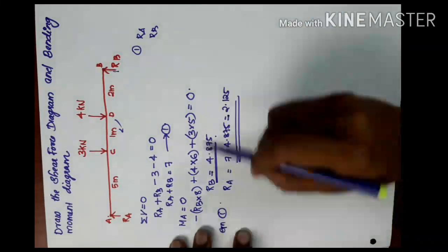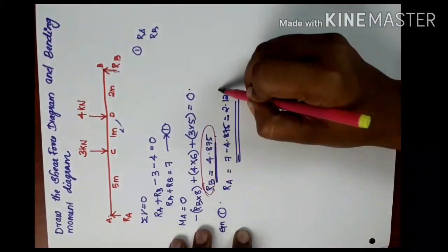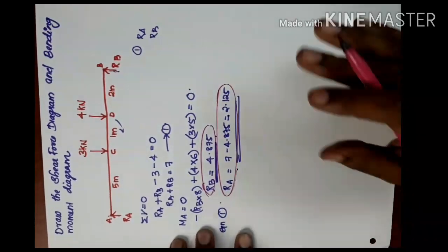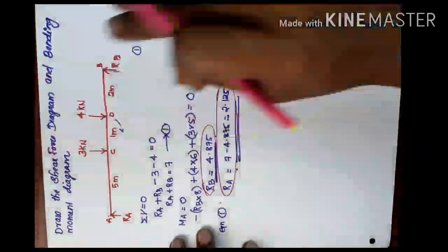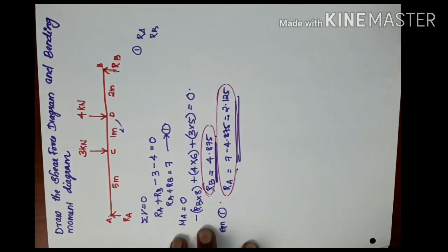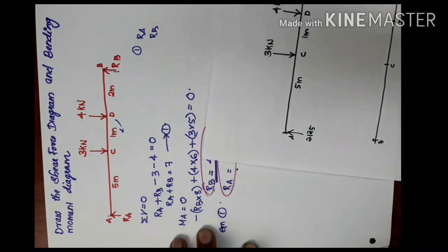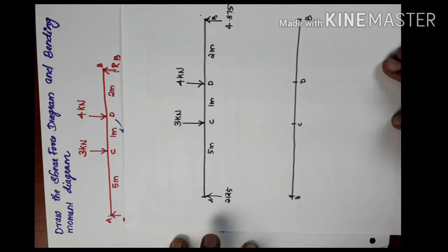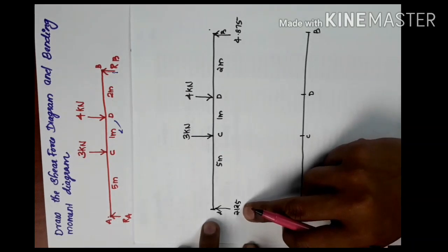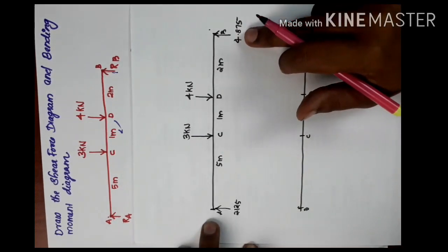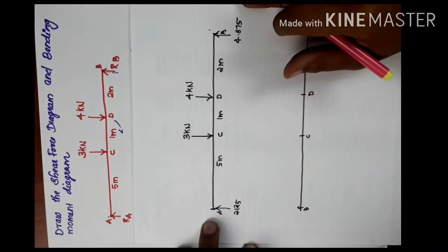So our answers are: RA equals 2.125 and RB equals 4.875. Now we are going to show the shear force diagram. I will show the beam on another paper — here is the beam with RA equal to 2.125 and RB equal to 4.875.